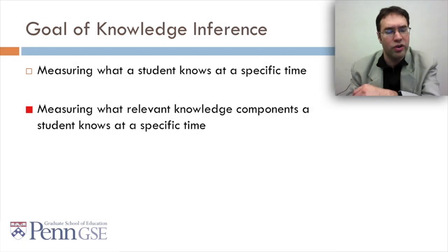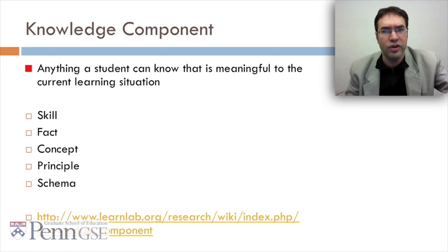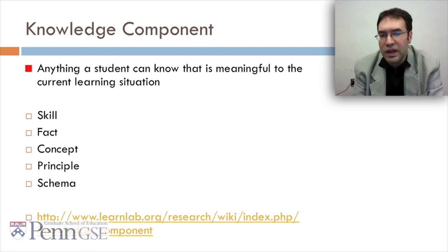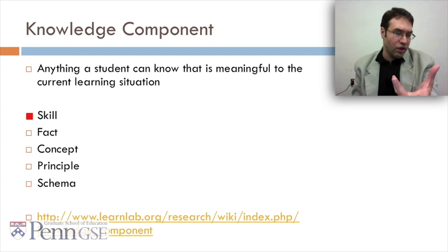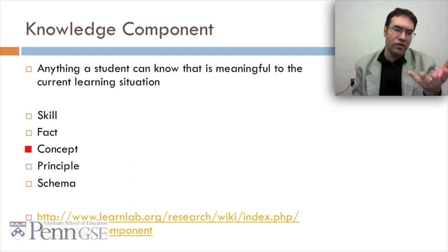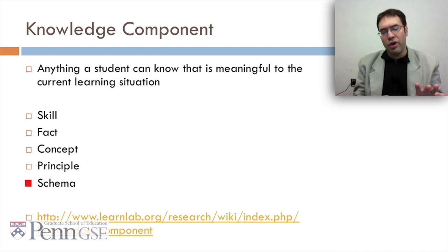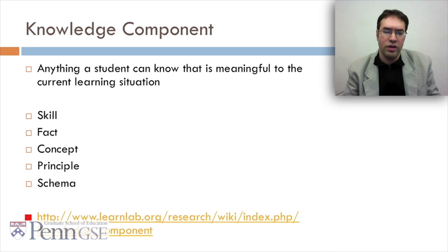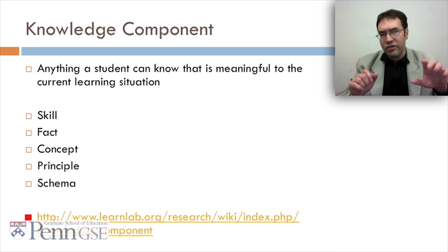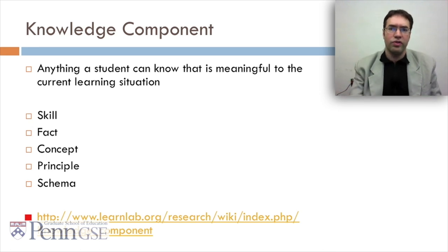What's a knowledge component? Well, a knowledge component is anything a student can know that's meaningful to the current learning situation, which might include skills, knowledge of facts, knowledge of concepts, knowledge of principles, knowledge of schemas. If you want to learn more about knowledge components, you can go to this link here on the LearnLab.org page. Basically, anything a student can know can be a knowledge component.